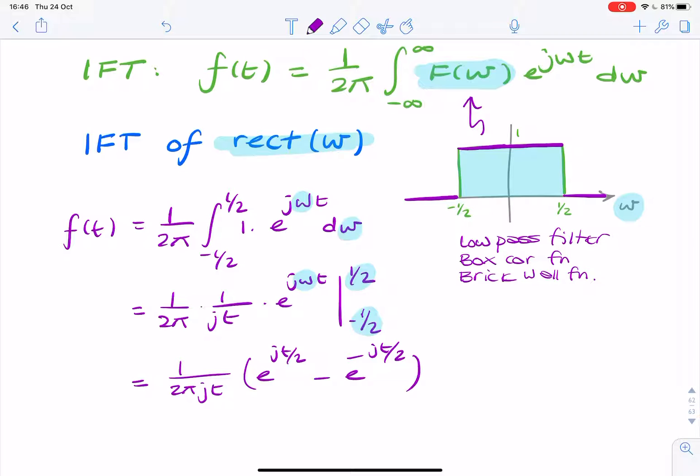Now we could leave it like that, but it doesn't look anything like a sinc function. So let's just remember what sin x looks like. sin x can be written as e to the jx minus e to the minus jx over 2j.